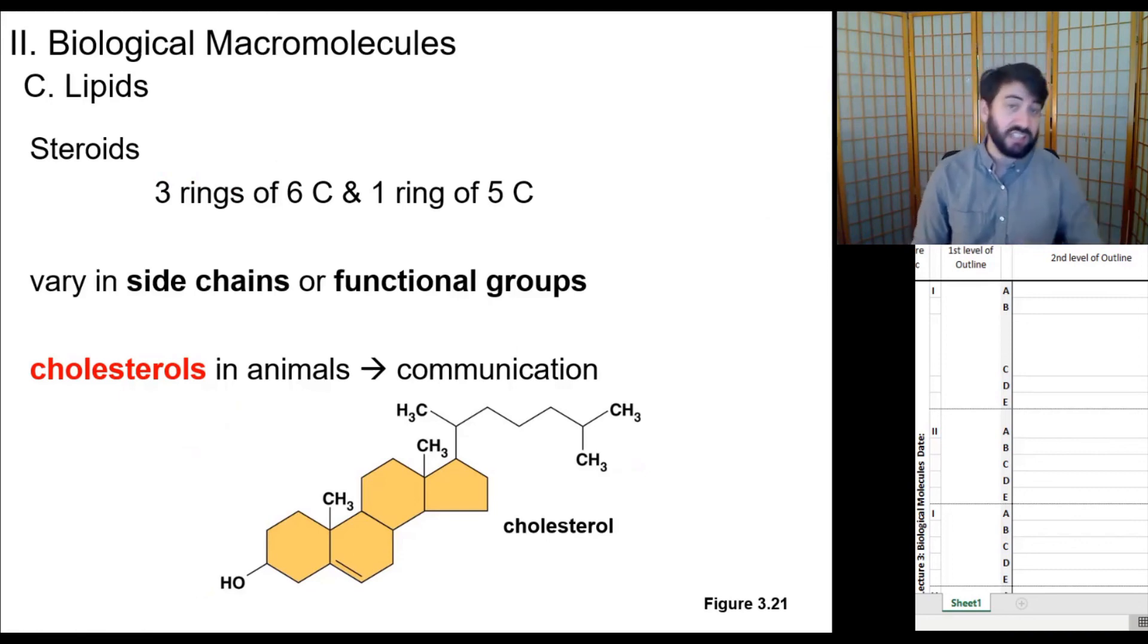Finally, steroids are the last type of lipid. Steroids are made up of three rings of six carbons and one five-carbon ring, but usually with a chain sticking off the end, as well as usually some functional groups added here or there. Cholesterol is the most famous or common type of steroid. It's actually used as a precursor for a lot of hormones, as well as structural component of a lot of animal cell membranes. We'll talk about that again later on.